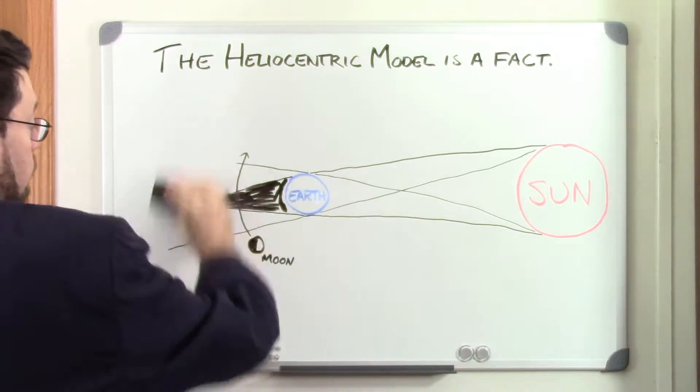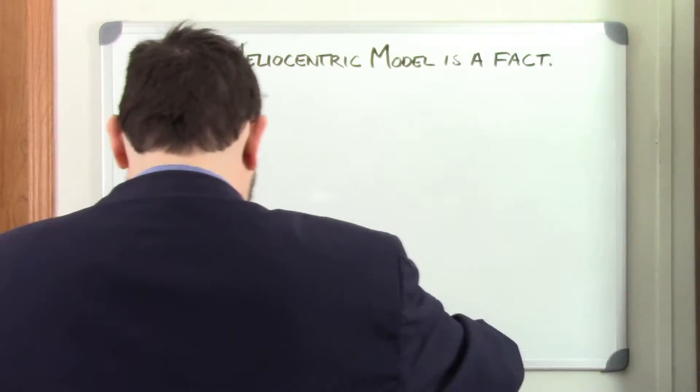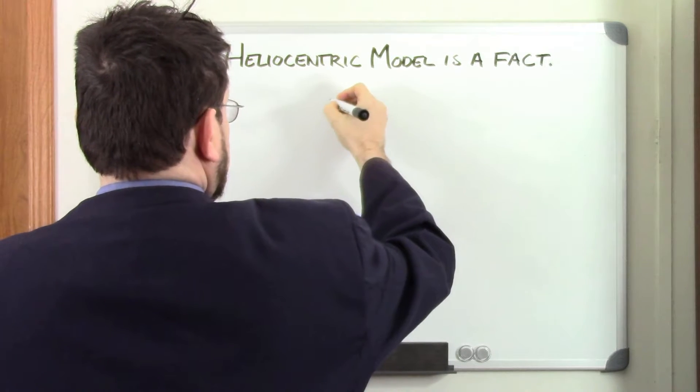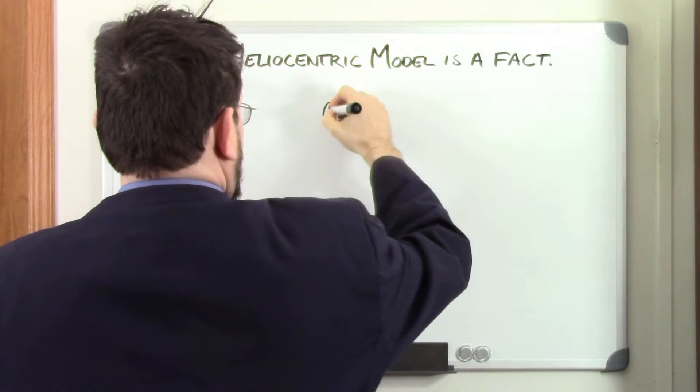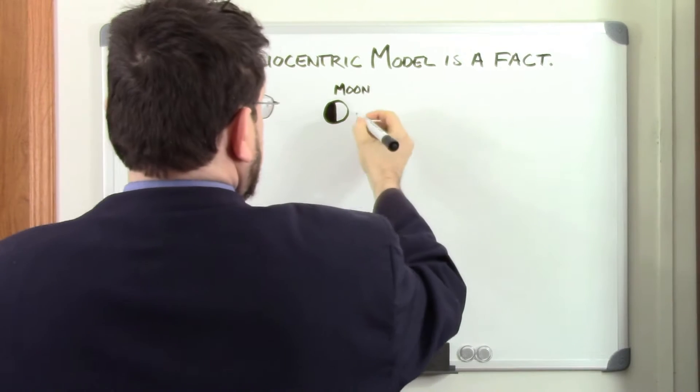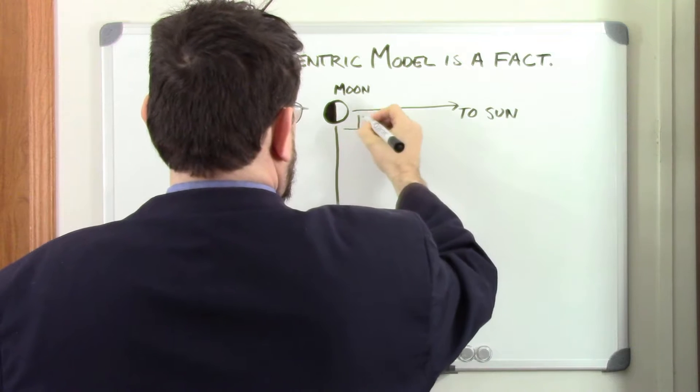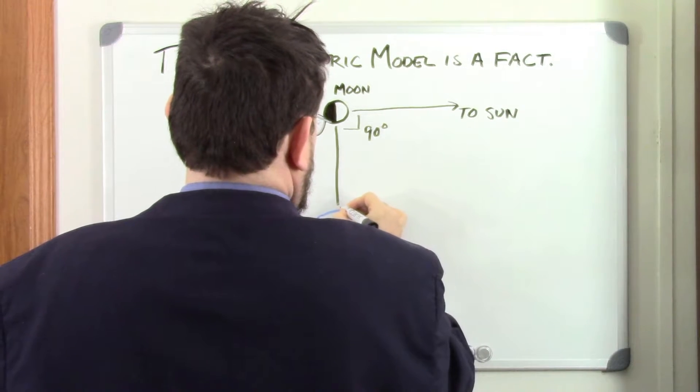By observing shadows cast on the earth, they were able to work out the size of the spherical earth. By observing eclipses of the moon, they were able to work out the size and distance of the moon. And by observing how the phases of the moon correlated with the angle between the moon and the sun, they were able to roughly estimate the size and distance to the sun.